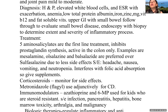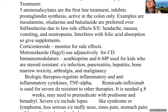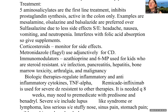Treatments: 5-aminosalicylates are the first-line treatment; they inhibit prostaglandin synthesis and are active in the colon only. Mesalazine, olsalazine, and balsalazide are preferred over sulfasalazine because they have fewer side effects. General side effects include headache, nausea, vomiting, and neutropenia. These medications interfere with folic acid absorption, so it is very important to give supplements.